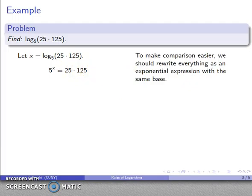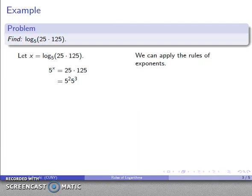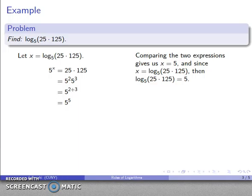Now I'll rewrite everything with the same base. 5 squared is 25 and 5 cubed is 125, so I'll use that. I'm multiplying two things with the same base, so I add the exponents: 5 to the power of 2 plus 3, which is 5 to the 5th power. Comparing my two expressions, 5 to power x equals 5 to power 5, so x must equal 5. Since x is log to base 5 of 25 times 125, this equals 5.